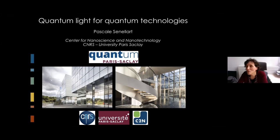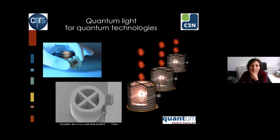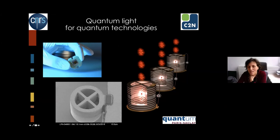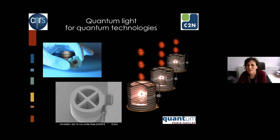The title of my talk is 'Quantum Light for Quantum Technologies.' My team works in optical quantum technologies. In a very condensed way, what we do is fabricate semiconductor devices using all the tools of optoelectronics. We make chips that look like regular chips, but if you zoom in, you find wheel-shaped optical cavities, each with an artificial atom at its center. With these devices we work on quantum light generation and quantum light manipulation.